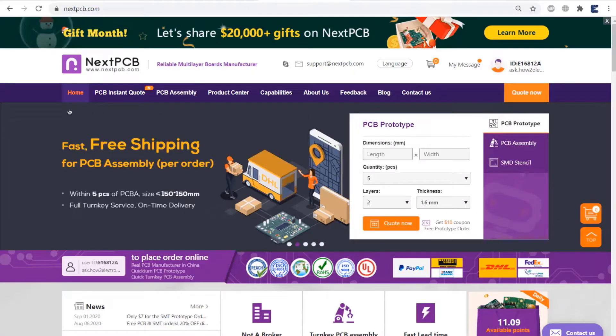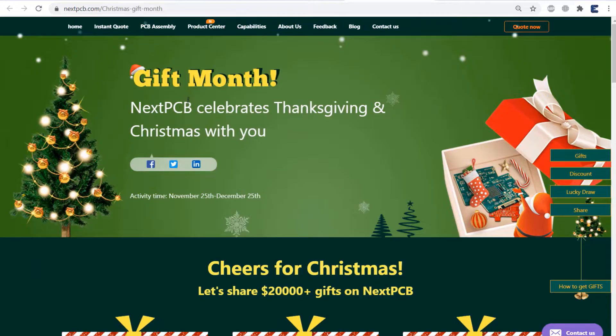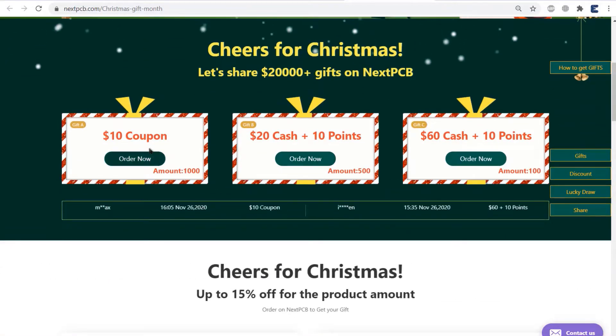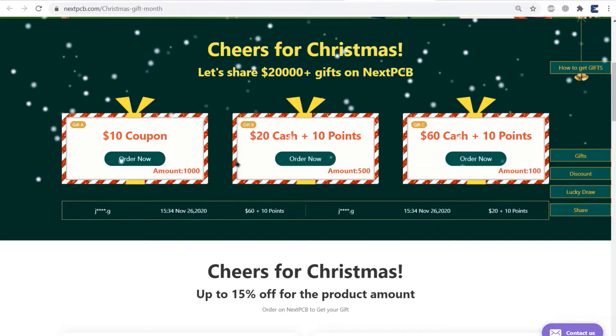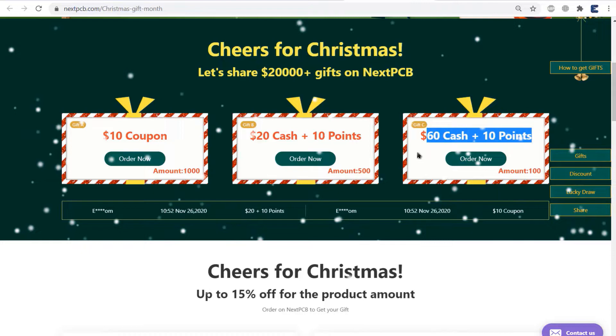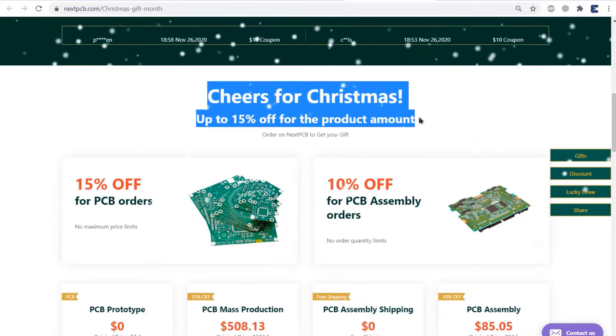This video is sponsored by NextPCB. Let's cheer for Thanksgiving Day and the coming Christmas Day. As the holiday is all around us, NextPCB prepares massive gifts for you. Cheers for the Christmas part. If you place an order on the NextPCB website, you can get the following free gifts: Gift A is a $10 coupon, Gift B is $20 cash plus 10 points, Gift C is $60 cash plus 10 points, and they can be used to deduct your PCB order. You can check details here.